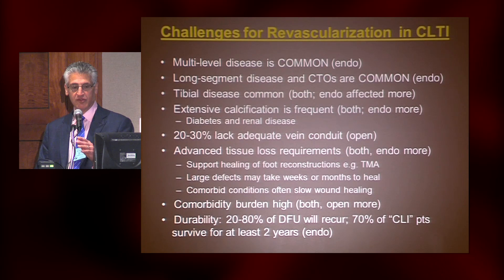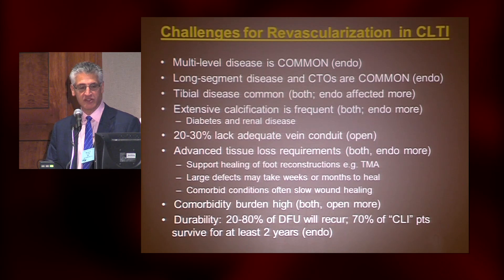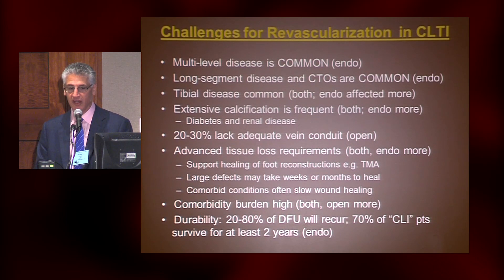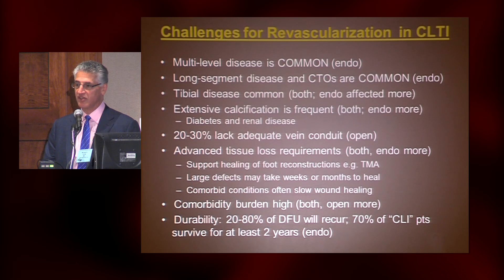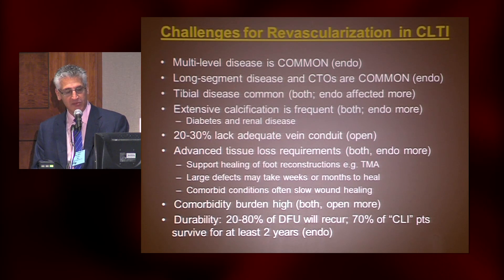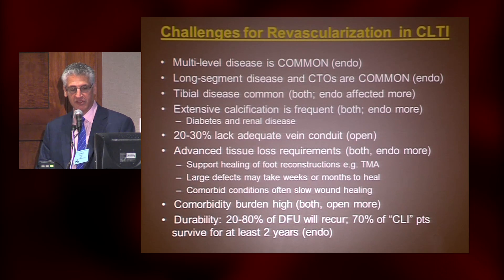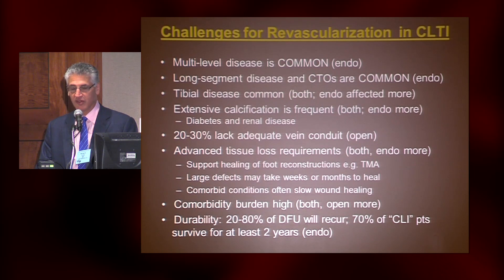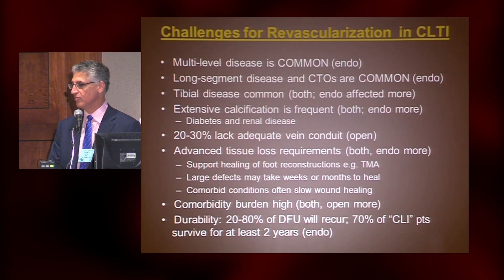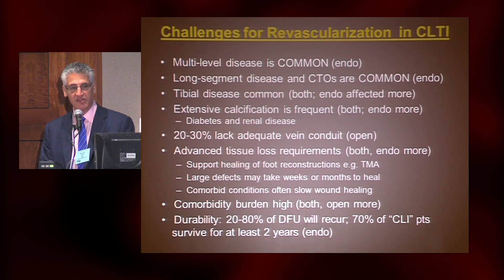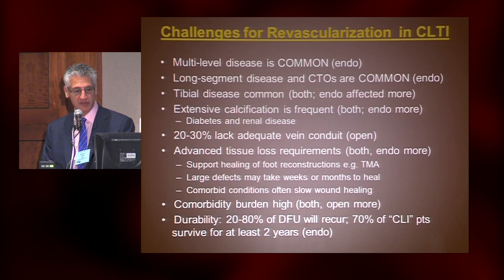Those of us who do vascular intervention in chronic limb-threatening patients realize how challenging this can be to achieve that goal. Even though we have lots of tools, the patients present at the end stage of atherosclerotic peripheral disease. Multi-level disease is common, which is actually a bigger challenge for endovascular than for surgery. Long-segment disease and chronic occlusions are common in critical limb ischemia. Tibial disease is also very common, and despite the fact that we've made lots of gains, tibial disease is a major problem both in terms of technical success and durability of reconstruction.